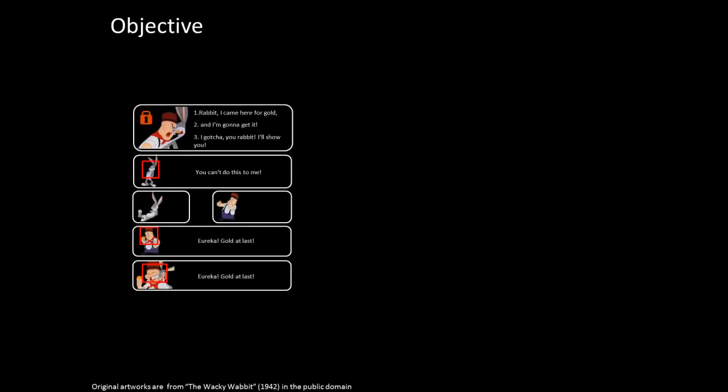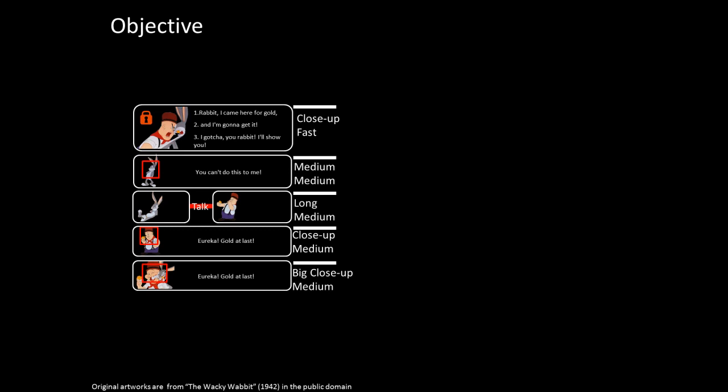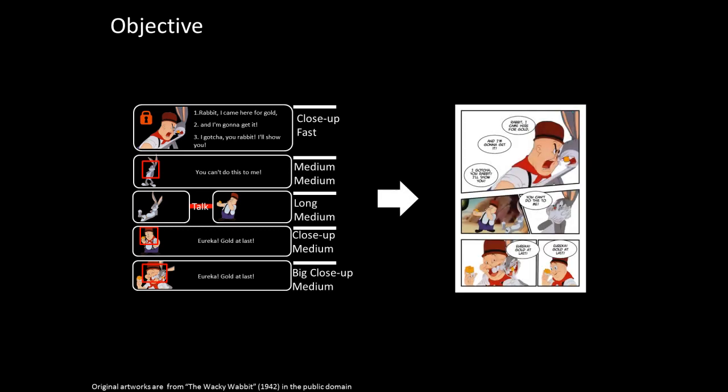Given a storyboard made up of picture subjects and their text scripts, as well as user-specified semantics, we automatically generate a composition of subjects and balloons on a page, as well as the panel layout.